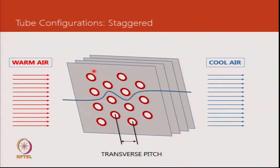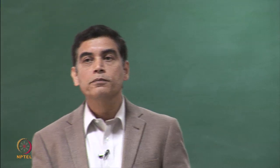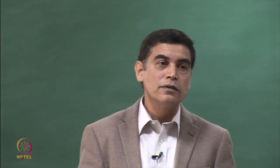To improve heat transfer, a staggered tube configuration is used — instead of tubes being directly in front of each other, they are alternated. This ensures air makes greater contact with the tubes. The penalty for this is increased air-side pressure drop, so air-side pressure drop goes up while heat transfer improves.